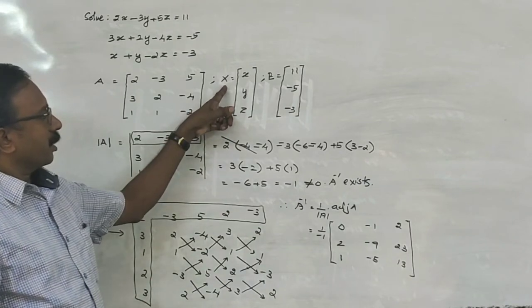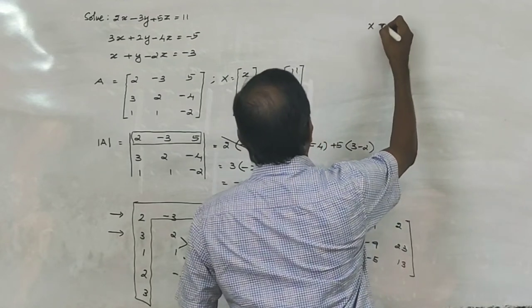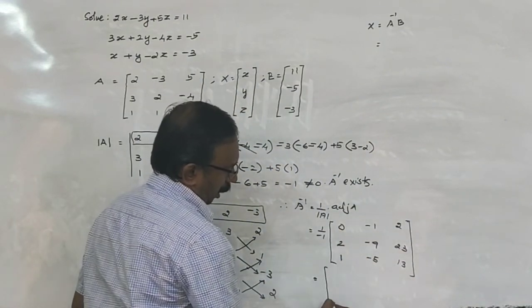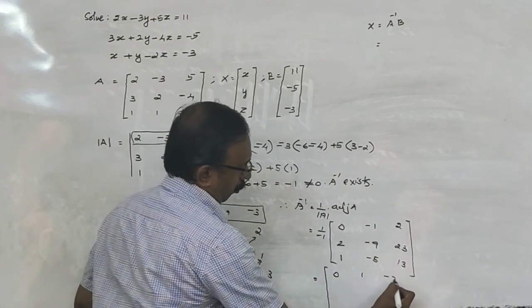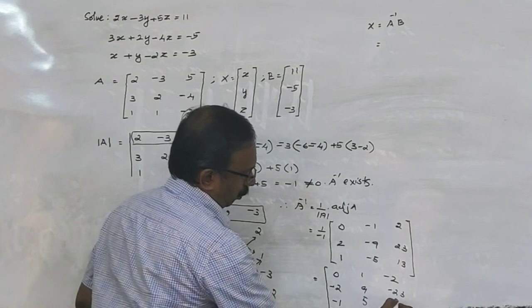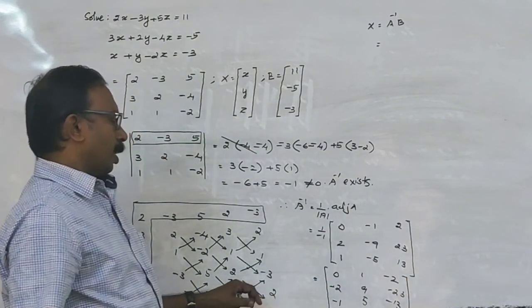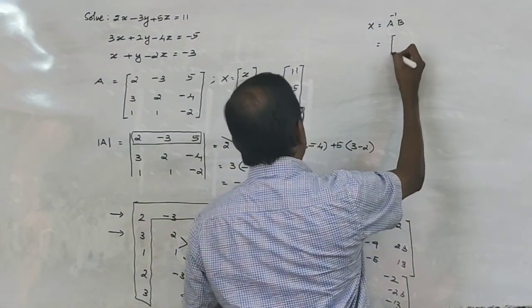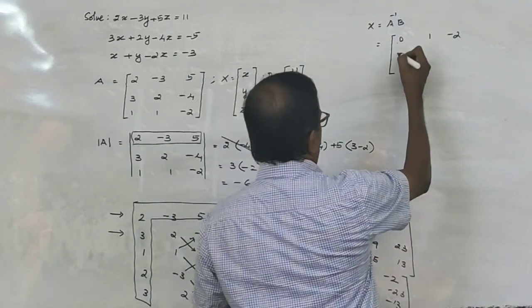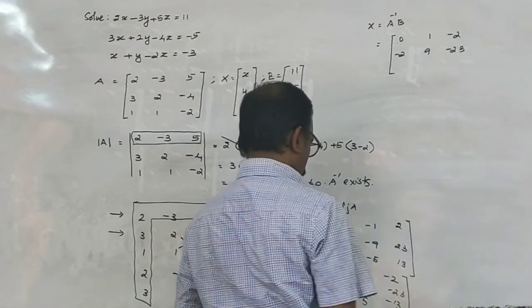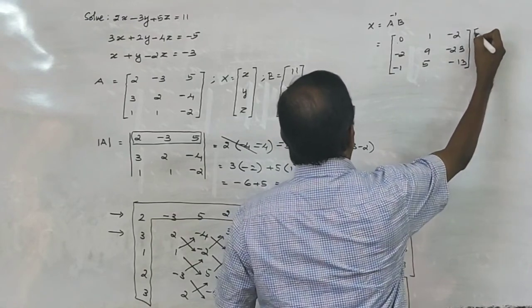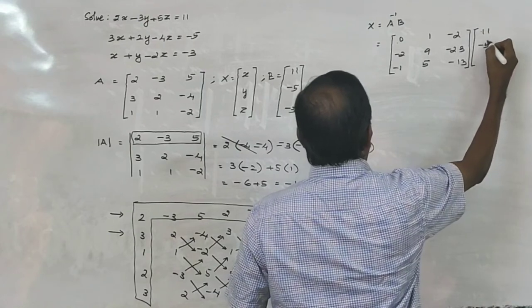Now we have to find X. X equals A inverse times B. Here A inverse is 1 over 3 times the matrix: 0, minus 1, minus 2; minus 2, minus 9, 23; minus 1, 5, minus 3. And B matrix is 11, minus 5, minus 3.